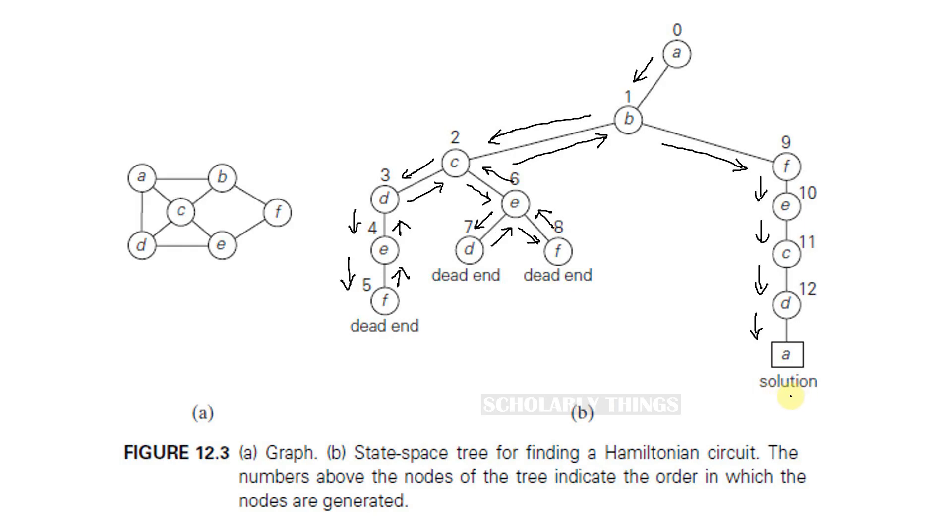We found a solution here. The path we just followed is a valid Hamiltonian path because we started at A and we ended at A, and also we visited all the nodes exactly once.